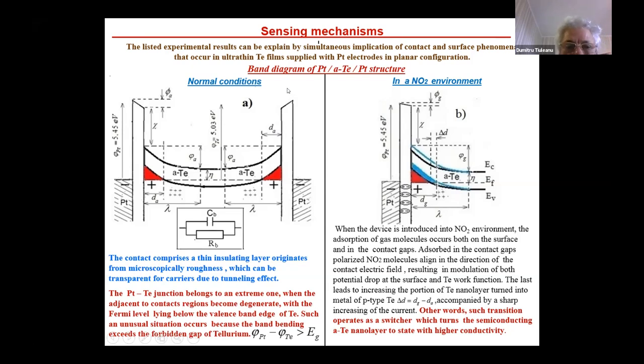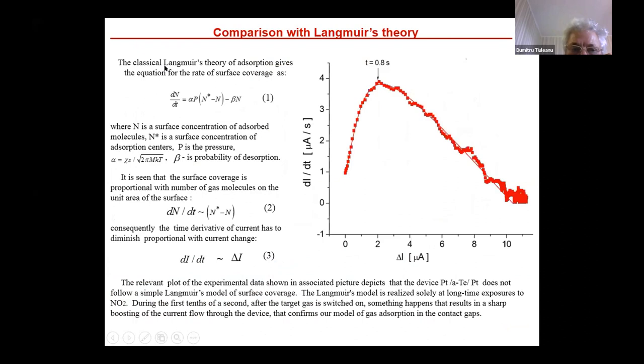Now, comparing with Langmuir theory of adsorption. The classical theory of adsorption is the rate of surface coverage by this equation, this formula. From this formula, N is a surface concentration of adsorbed molecules, and N* is a surface concentration of adsorption centers. It is seen that the surface coverage is proportional with number of gas molecules on the unit area. The time derivative of the current has to diminish proportional with current change.